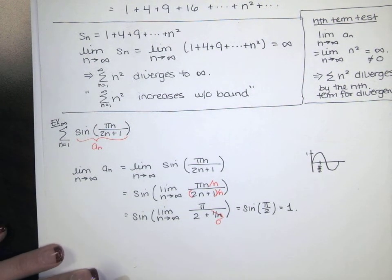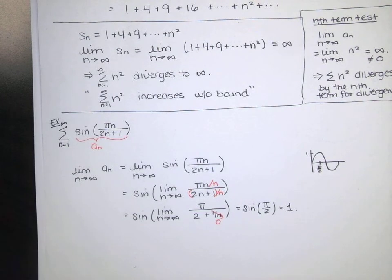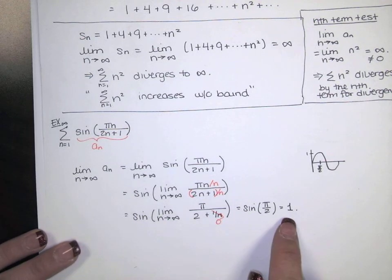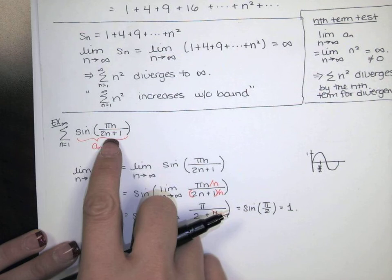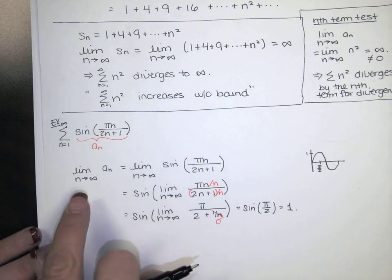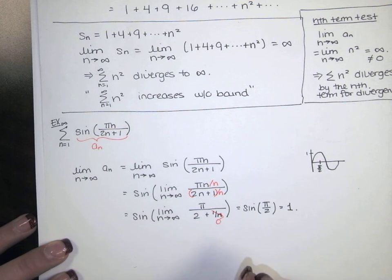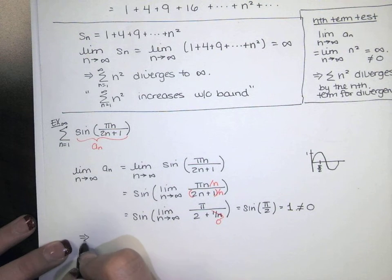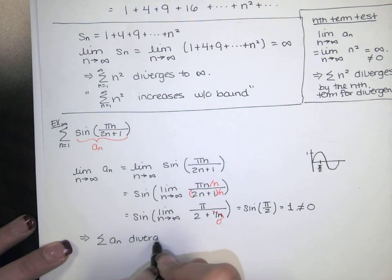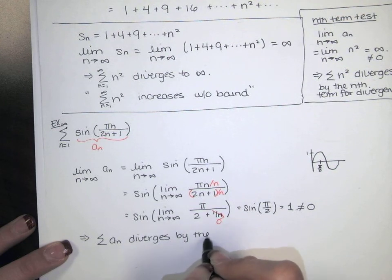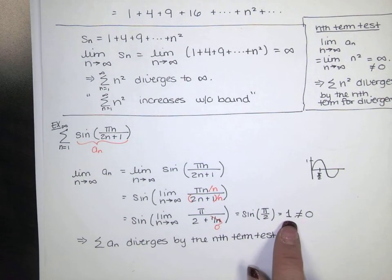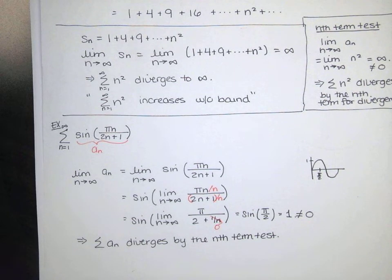Sine of pi over 2 is 1. Now you might be saying, well that approaches 1 — that doesn't tell me anything. Be careful. The sequence a sub n approaches 1. So as n goes to infinity, these terms, written in a list, are approaching 1, and then we're going to add them all together. Since this limit is not equal to 0, the series diverges by the nth term test. The idea is eventually I'm going to add a number that's very close to 1 to itself infinitely many times. Even if it was just 1 plus 1 plus 1 forever, I'm going to get infinity.